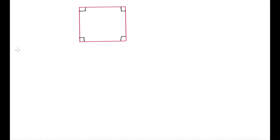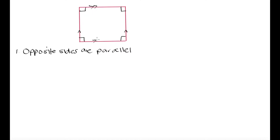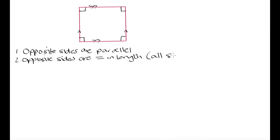Let's list the properties we have been discussing. The first is that opposite sides are going to be parallel — this side is parallel to this side, and this side is parallel to this side. Then we have that opposite sides are going to be equal, and as we saw with the rhombus, all of these sides are actually equal in length, so opposite sides are equal, but actually all sides are equal in length.